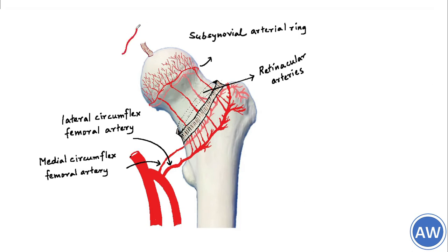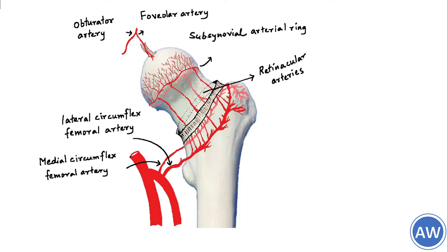A small branch from the posterior division of the obturator artery travels through the ligamentum teres femoris and supplies the area of the femoral head around the fovea capitis. This is called the foveolar artery. The foveolar artery is patent and of significant importance in children, and it becomes small and insignificant in adults.